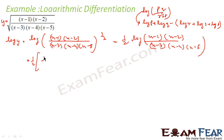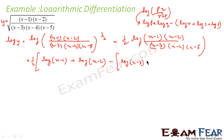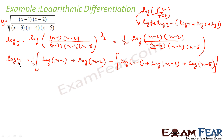Same thing I can do here, so this becomes: log y equals 1 by 2 times [log(x minus 1) plus log(x minus 2) minus log(x minus 3) minus log(x minus 4) minus log(x minus 5)]. Now let us differentiate the whole thing with respect to x.